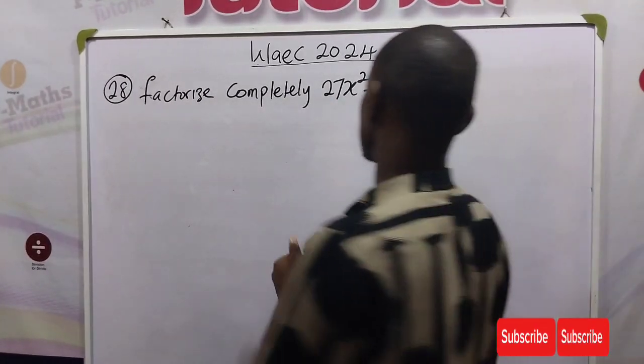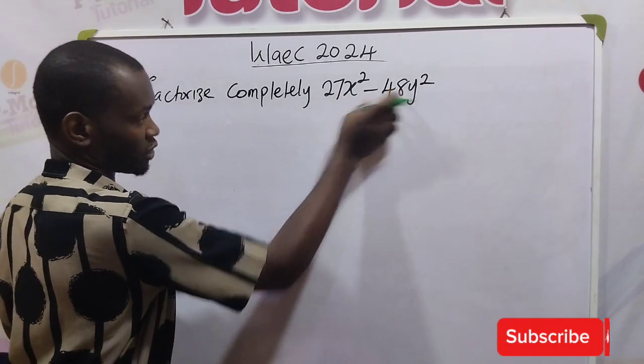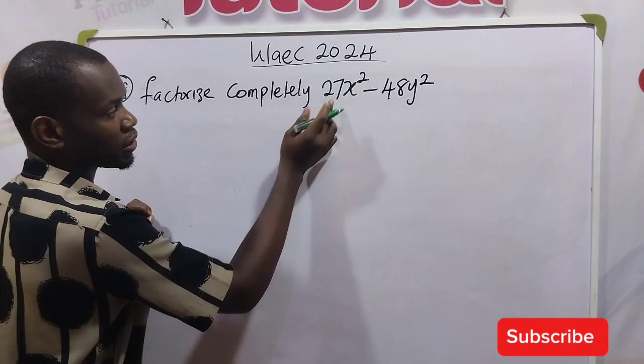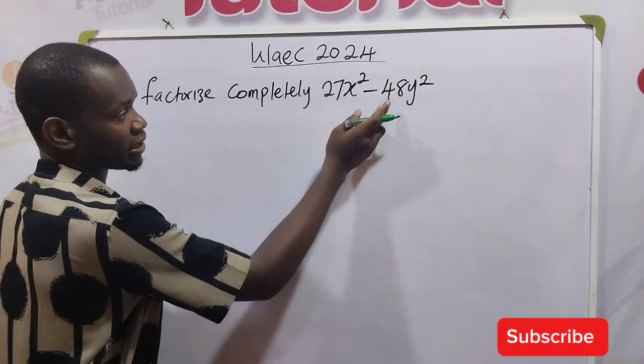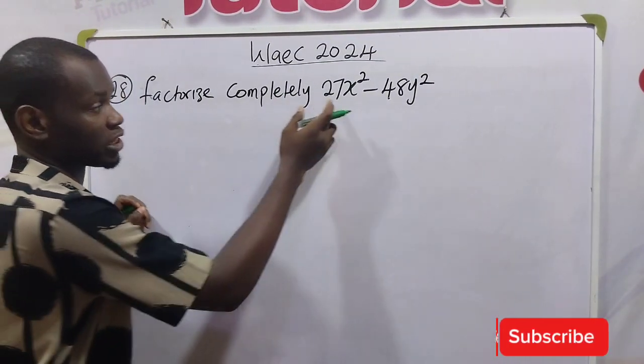The first thing we want to do is to find the common term between 27 and 48, which is 3. 3 can divide 27 and 3 can divide 48. That is the biggest number that can divide both of them.